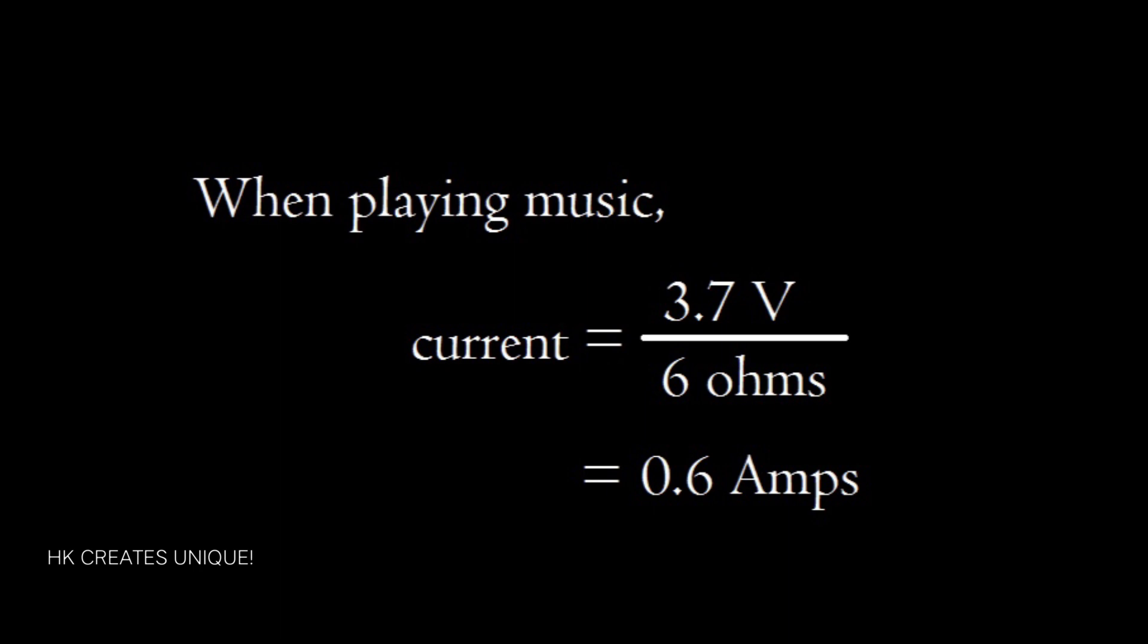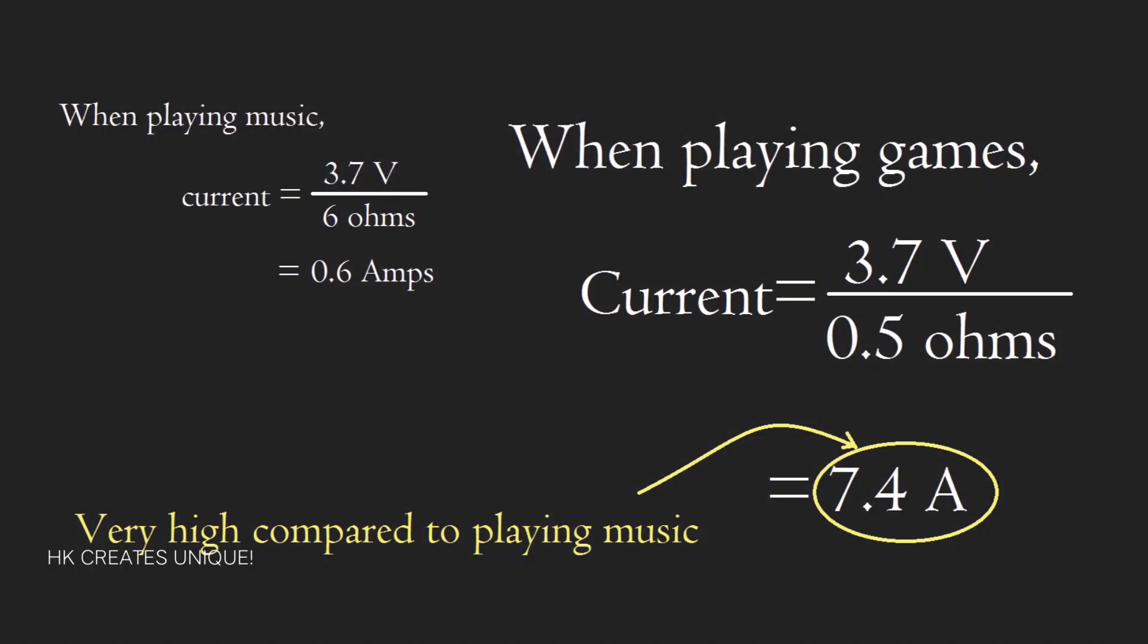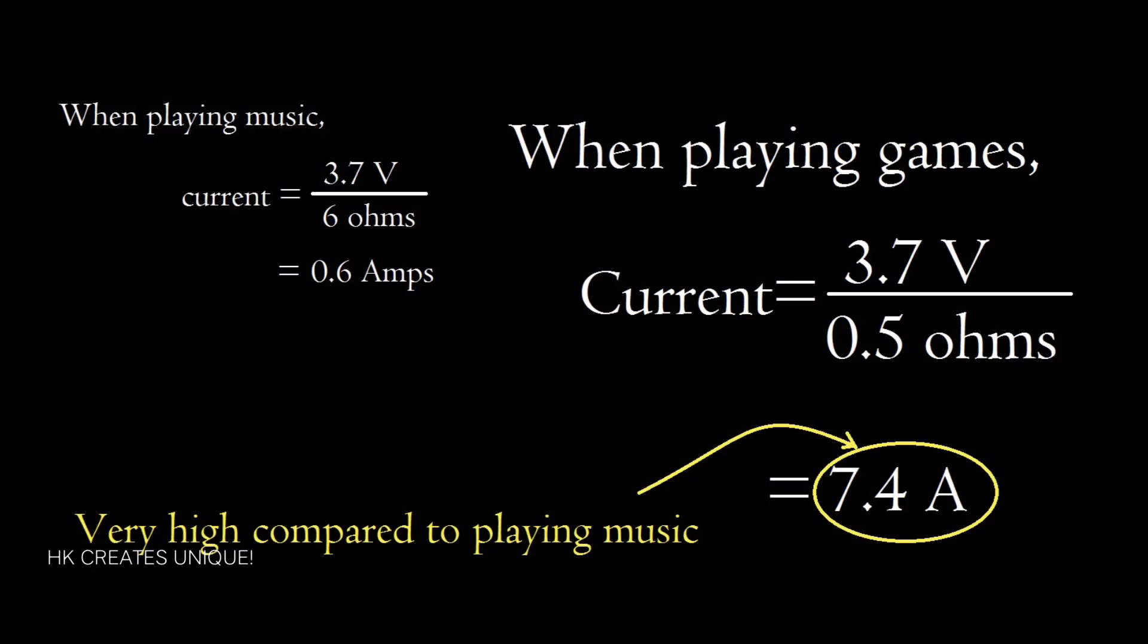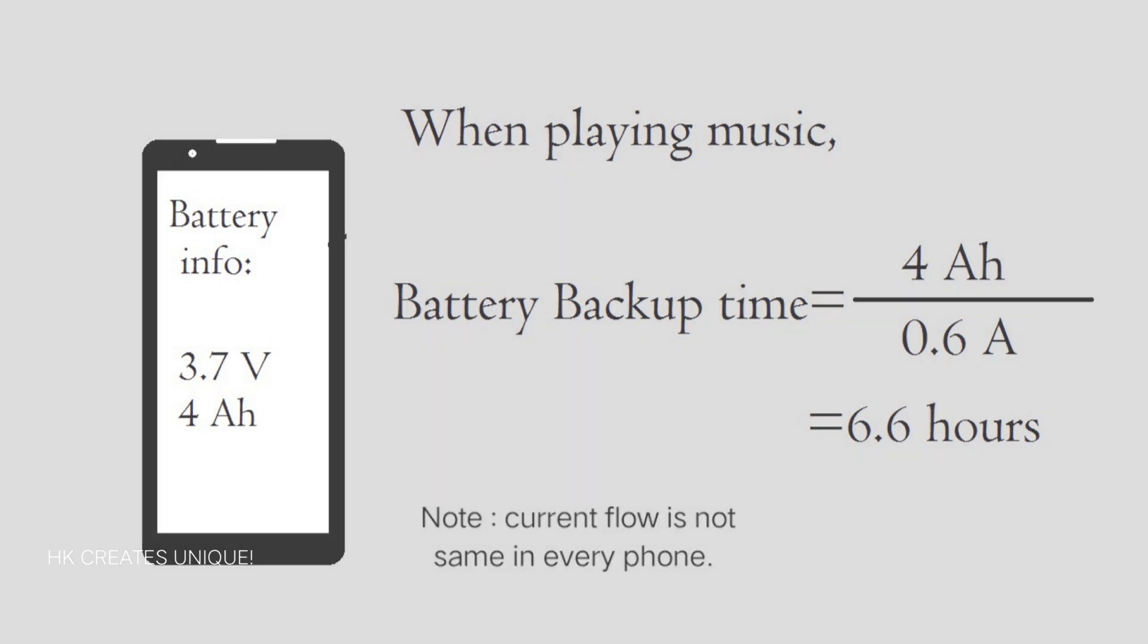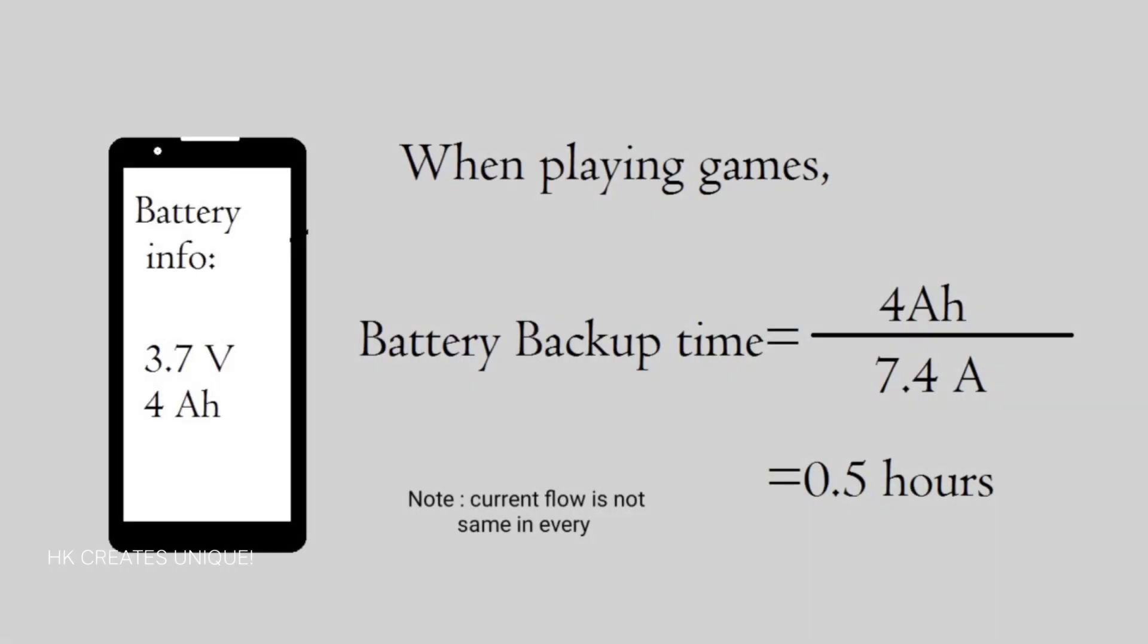Now, using Ohm's law, calculate the current. When playing music, current flows at 0.6A, and when playing games, current flows at 7.4A. As you can see, current flows much more during gaming. Now, using the battery capacity formula, calculate time. When playing music, it gives approximately 6.6 hours. When playing a certain powerful game, it gives 0.5 hours backup time.